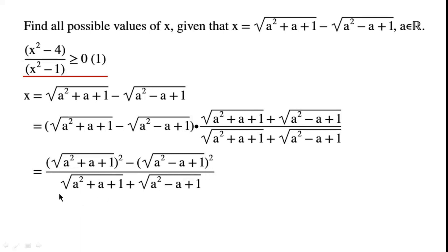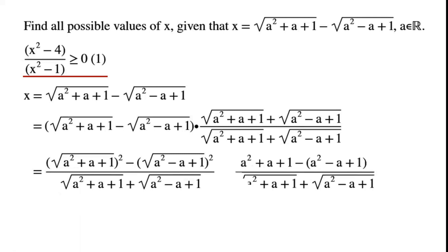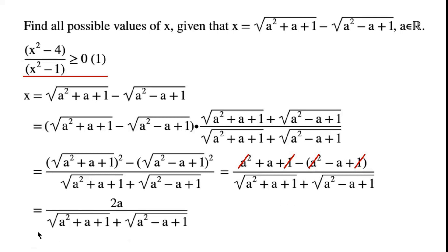The difference of two squares simplifies as the squared root terms cancel with each other, and the 1 and minus 1 terms cancel. We simplify the numerator to get 2a. So we can write x equals 2a over the square root of a squared plus a plus 1 plus the square root of a squared minus a plus 1.